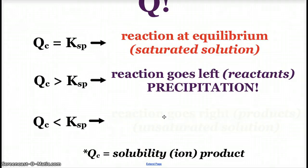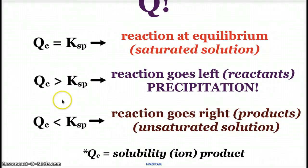If Q is less than KSP, then the reaction is going to head to the right. It would head towards ionization, so we would have an unsaturated solution. So let's see how this looks like with a calculation.